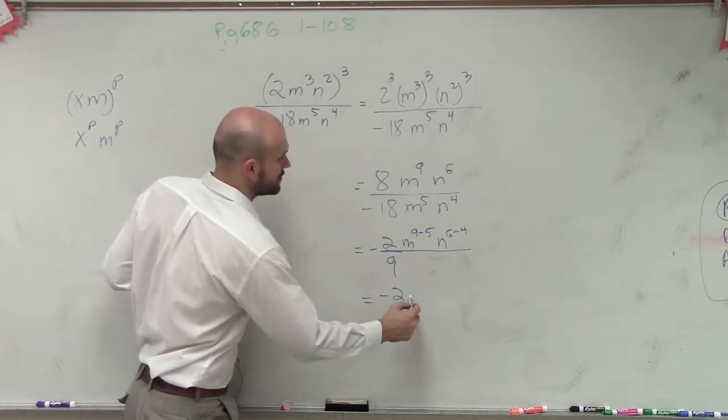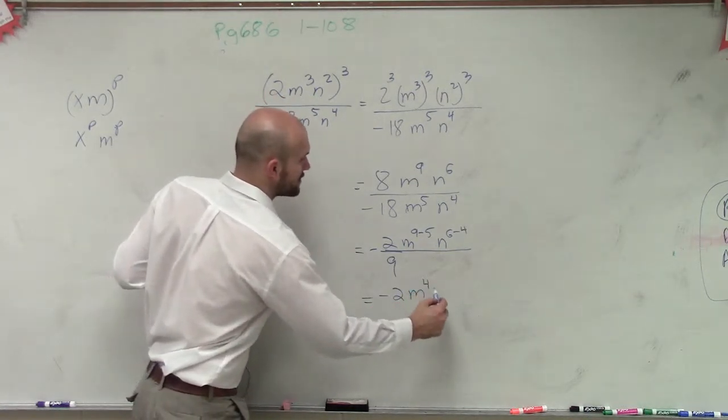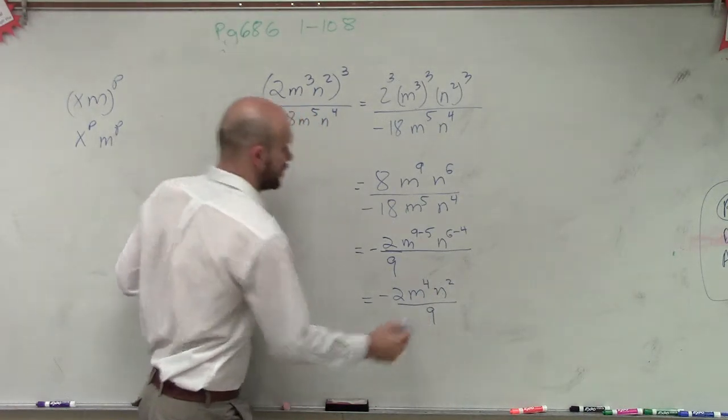Well, that equals a negative 2, m to the fourth, n squared, all over 9.